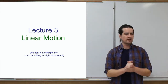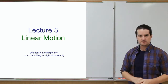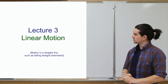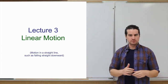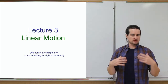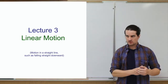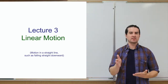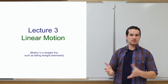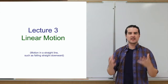Welcome to the third lecture in this course about physics. Last time we talked about Newton's first law of motion, having to do with inertia — how objects at rest want to remain at rest, and if they're in a uniform state of motion, they want to keep doing that as well. To change their motion, a net force needs to act on them.